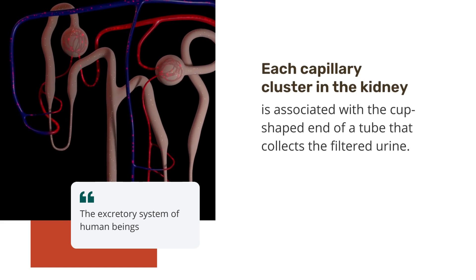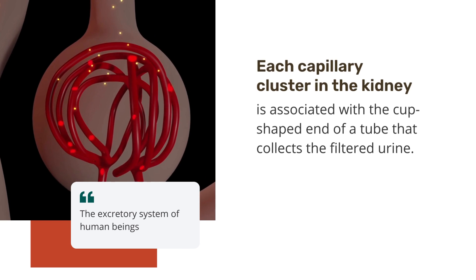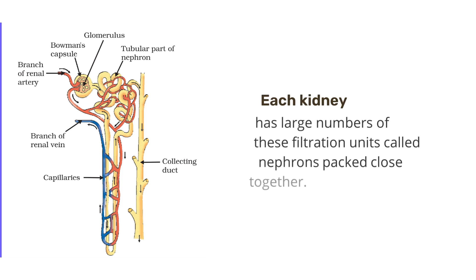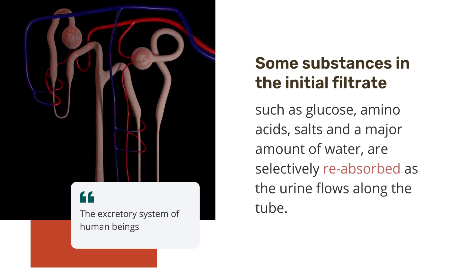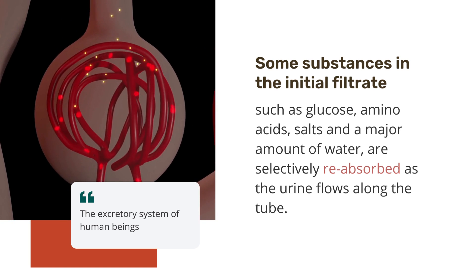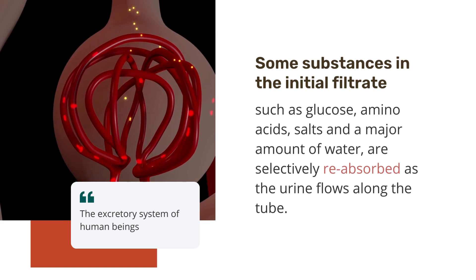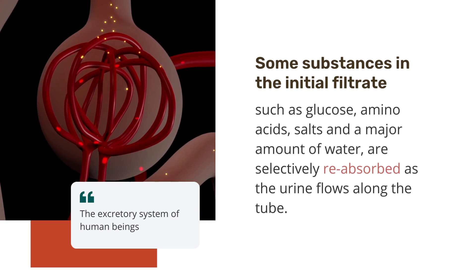Each capillary cluster in the kidney is associated with the cup-shaped end of a tube that collects the filtered urine. Each kidney has a large number of these filtration units, called nephrons, packed close together. Some substances in the initial filtrate, such as glucose, amino acids, salts and a major amount of water are selectively reabsorbed as the urine flows along the tube.